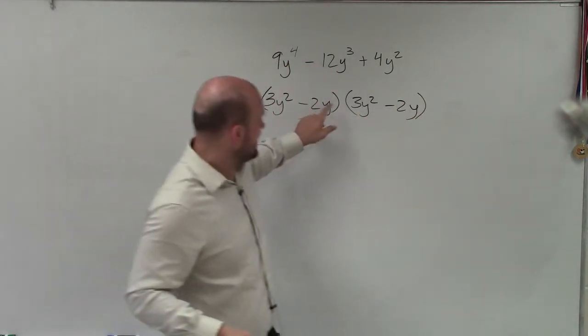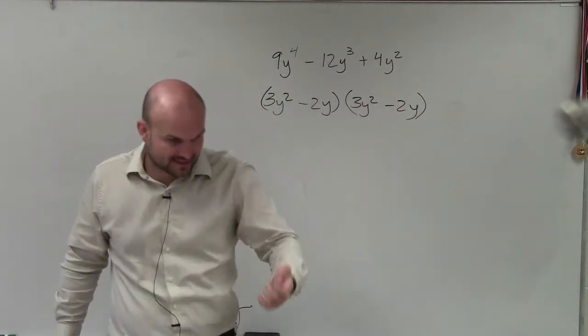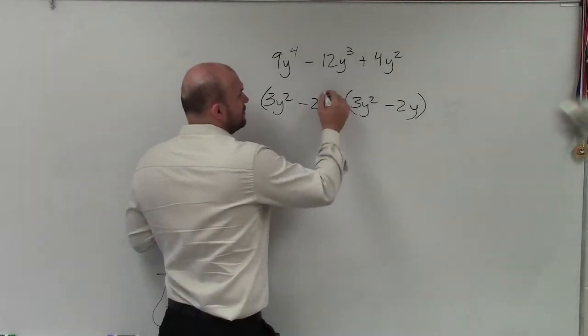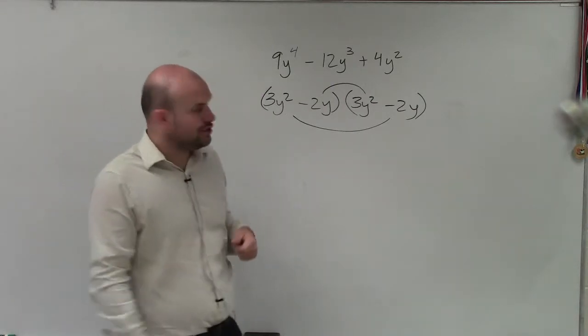Again, let's check. Is negative 2y times negative 2y positive 4y squared? Yes. Now, to determine if this works as a perfect square trinomial, we need to multiply the middle and the outer terms to see if that's going to give us negative 12y cubed.